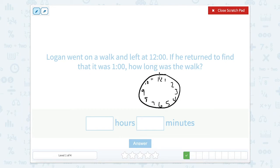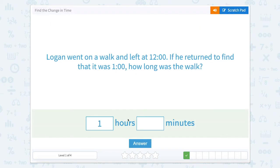So we know that Logan started his walk at 12, and then he went and came back at one o'clock. So how many hours are in between 12 and 1? Well, that's just one hour. And there would be zero minutes because the minutes did not change.